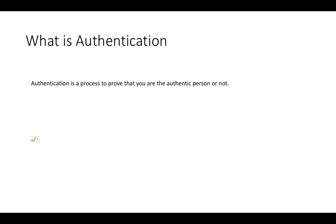Do not get confused with authentication versus authorization — they are both related but separate entities. Authentication is a process to make sure that you are an authentic person or not. Take a basic example: when you try to log into your Gmail account and provide the correct username and password, it gives you access. If the username or password is incorrect, it will throw an error saying password mismatch and ask you to log in again. This is called authentication.